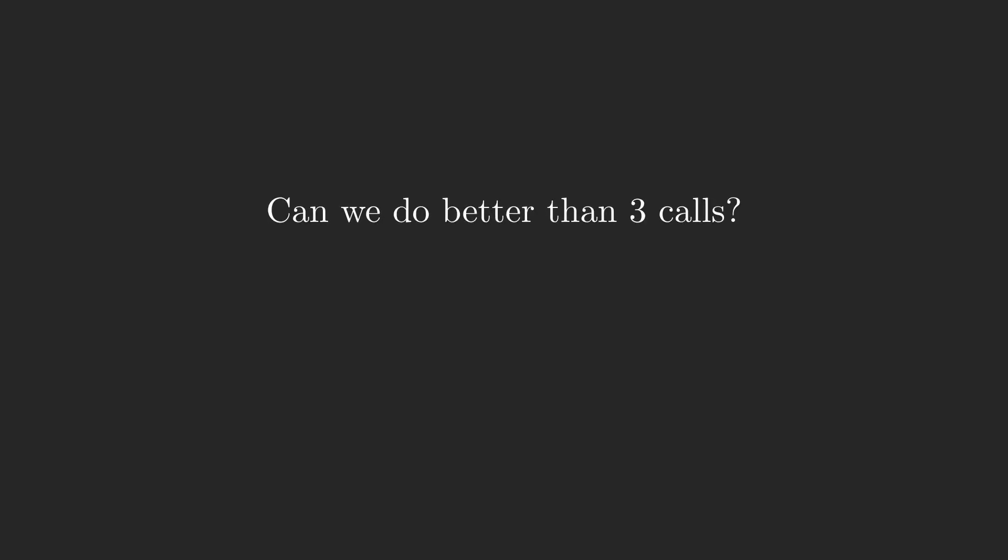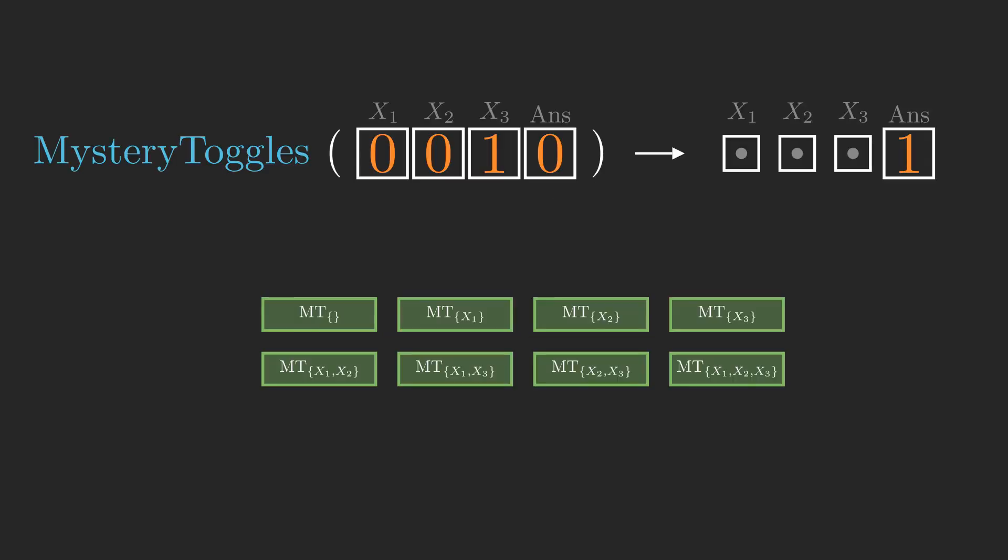Spoiler alert, the answer is unfortunately for us, no. But you may have noticed that we could have toggled multiple bits before calling mystery toggles. With the information you see on screen now, we would know that exactly one of the lines for x1 and x2 are present, since answer must have been toggled exactly once.